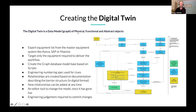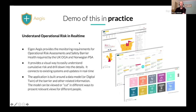In the demo we're going to show our application called Aegis, implemented for assets on the Norwegian Continental Shelf. The demo has been built in collaboration with Aker Energy based on the Goliath instance. It allows monitoring of operational risk assessments and safety barrier health as required by the Norwegian Petroleum Safety Authority and the UK Oil and Gas Authority. It's a web-based tool that provides an easy way to understand the information and see it in context.